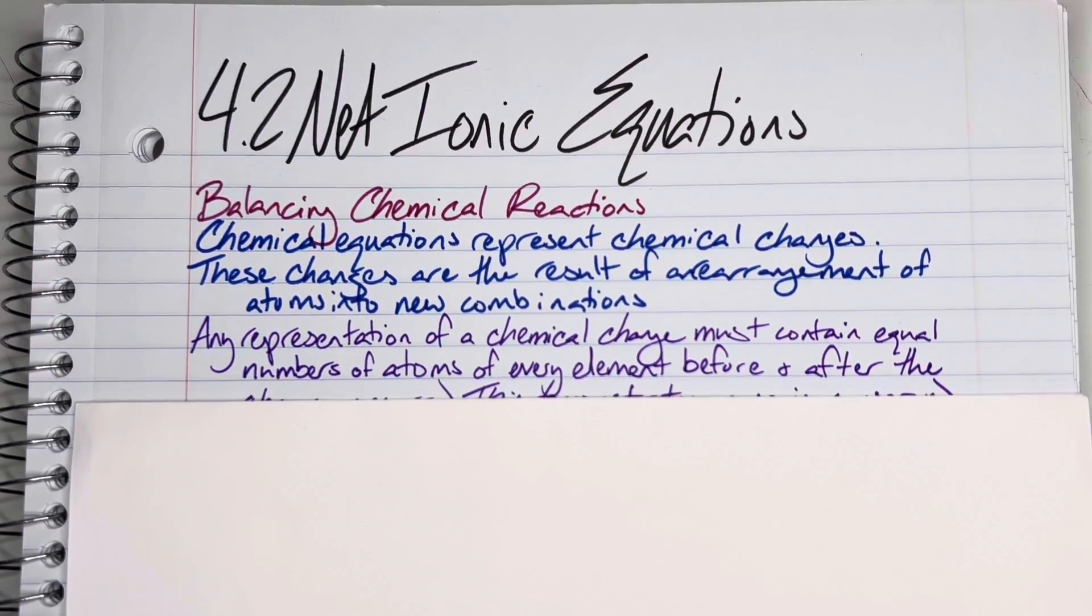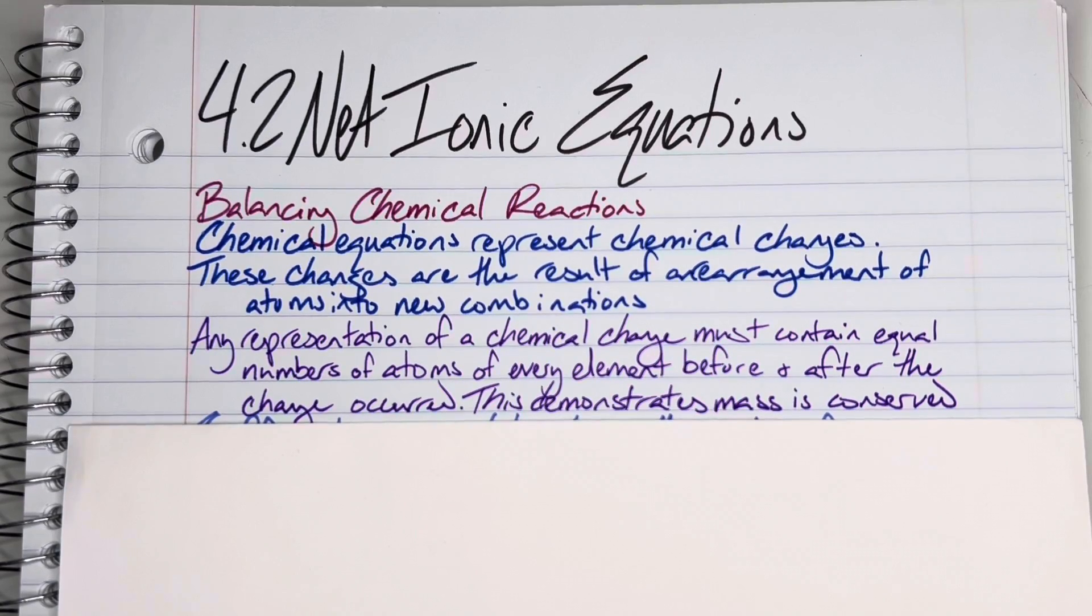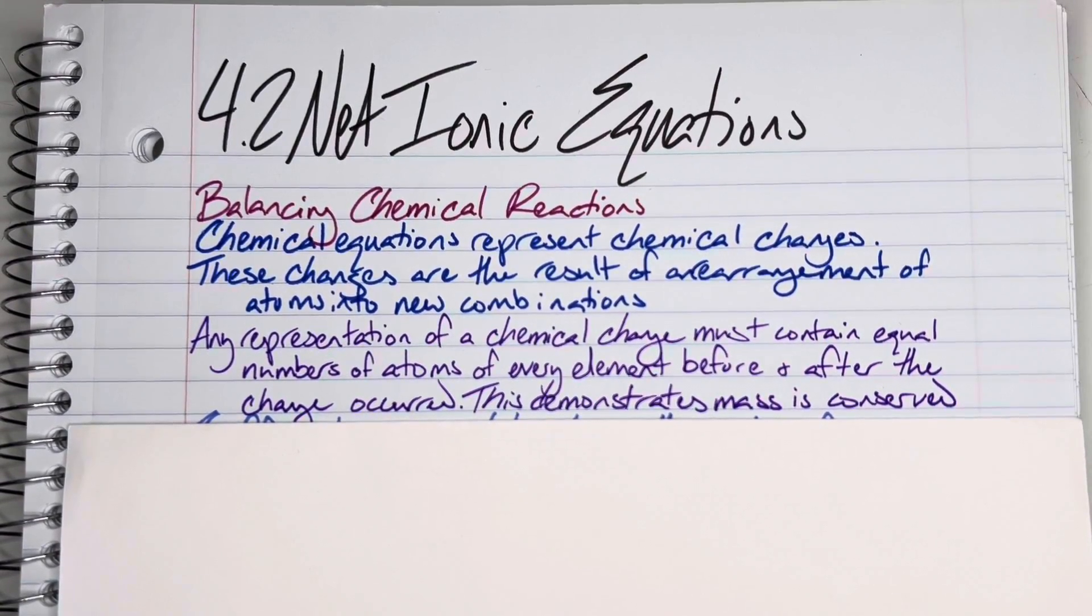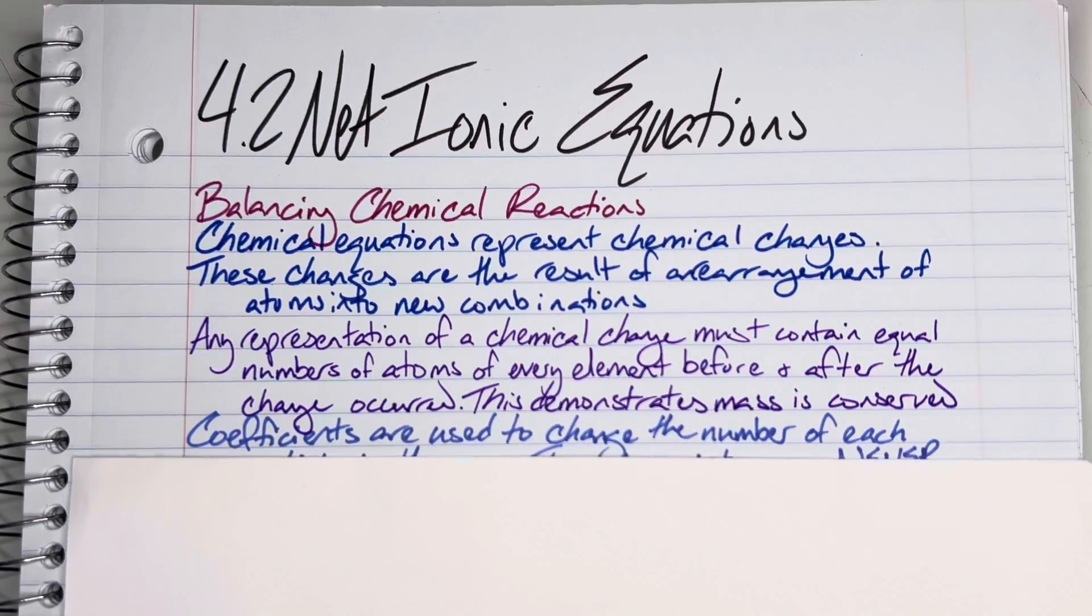Any representation of a chemical change must contain the same number of atoms of every element before and after the change occurred. This demonstrates that mass is conserved. You cannot create or destroy mass or matter, so the number of individual elements needs to be the same on both sides of the reaction arrow.